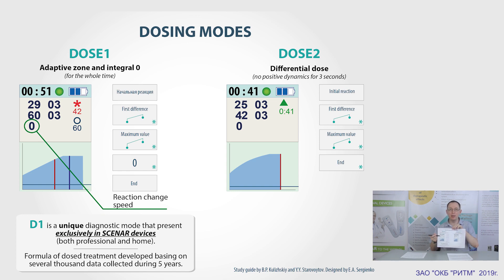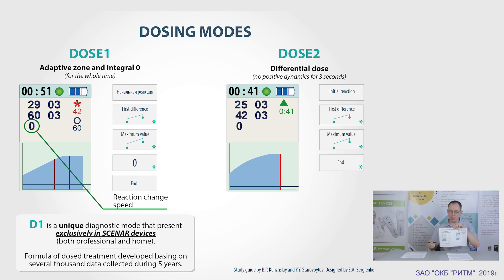That value of current reaction will change, since the dialogue between the device and the body is a continuous process. Here we can see how the reaction was changed — in this case the initial reaction is the lowest point, and here we can see how it grows up. Under the reaction value, we can see the parameter which is called the reaction change speed.